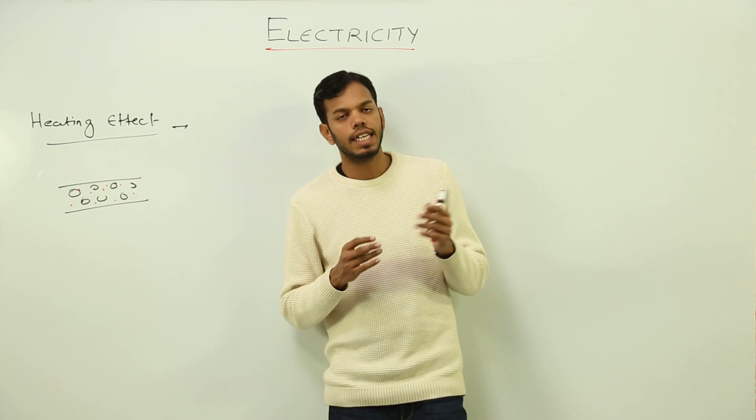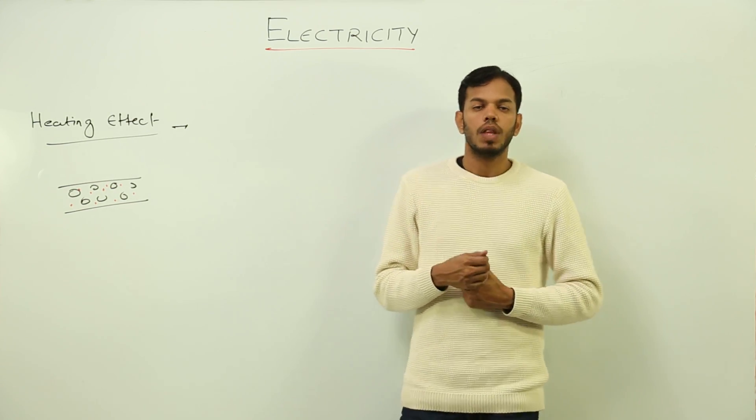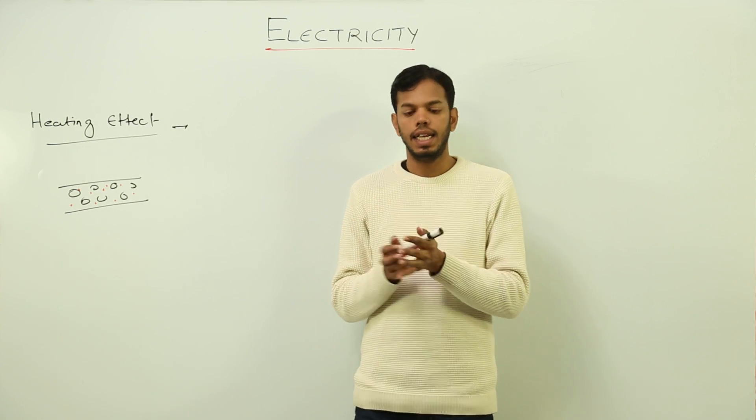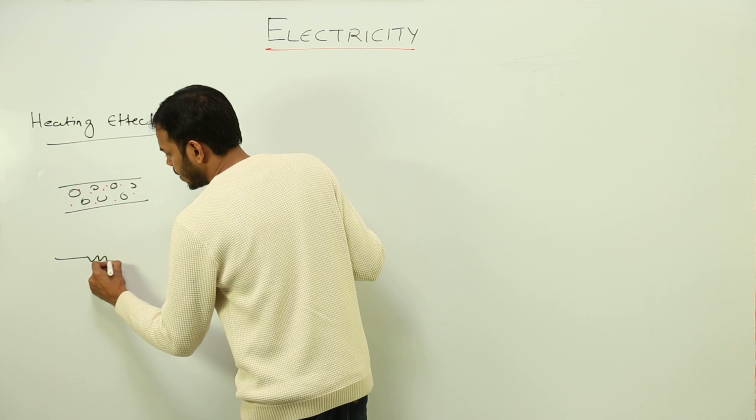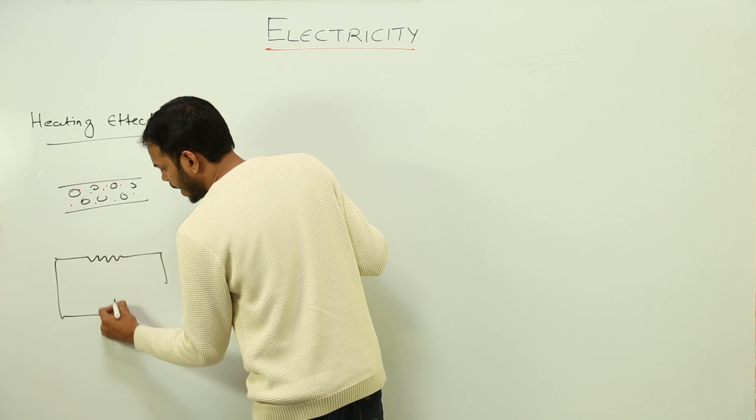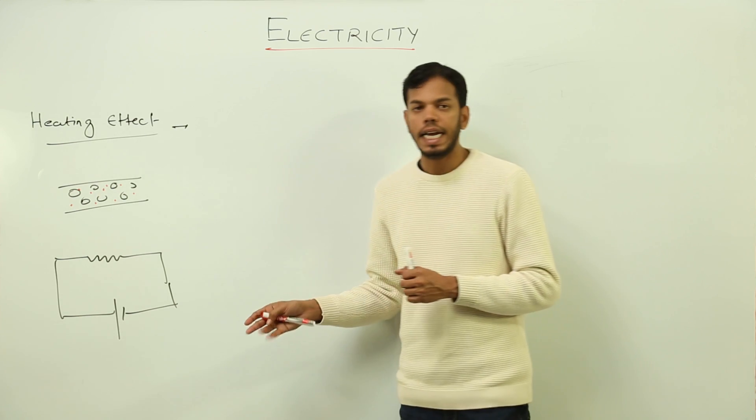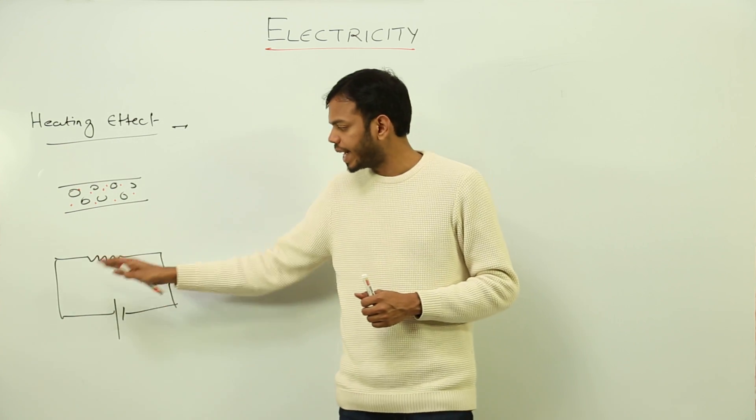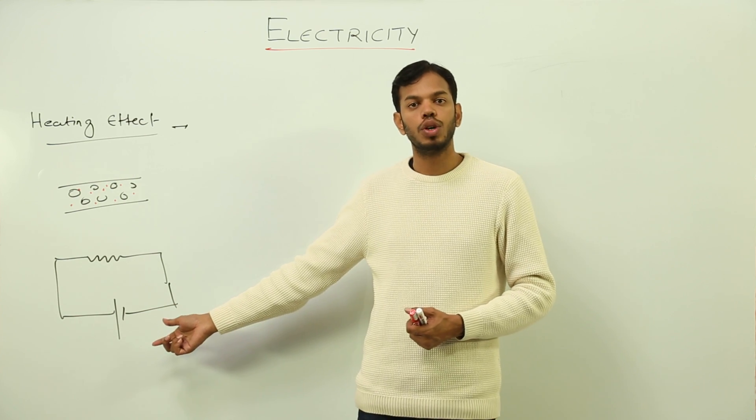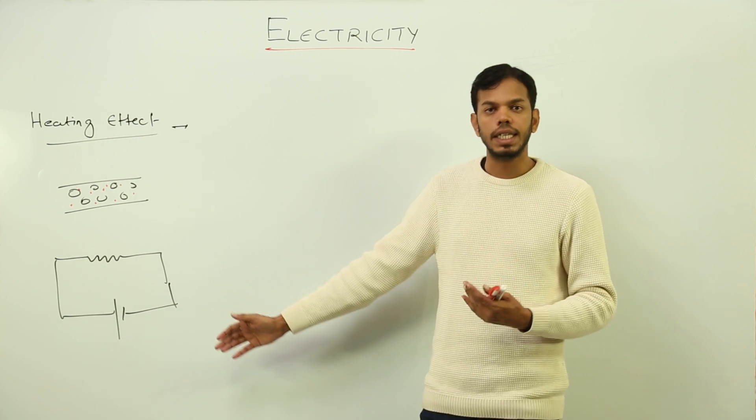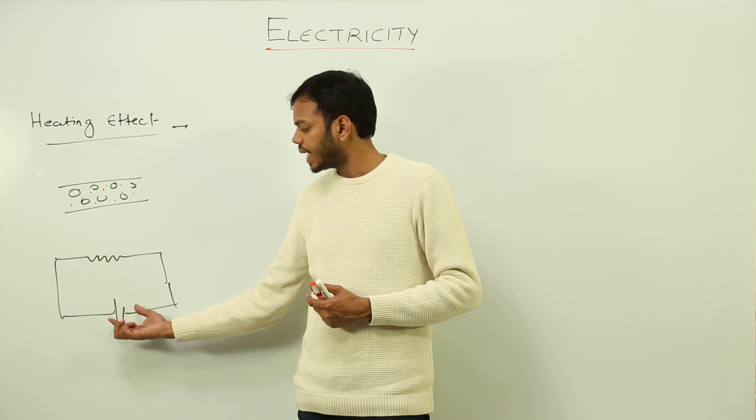See, I'll explain this thing again. We know that a cell - let me draw a circuit - suppose there is a very simple circuit like this and the cell. This cell provides current, provides the flow of current in the circuit. But this cell has what? Chemical energy stored in it.